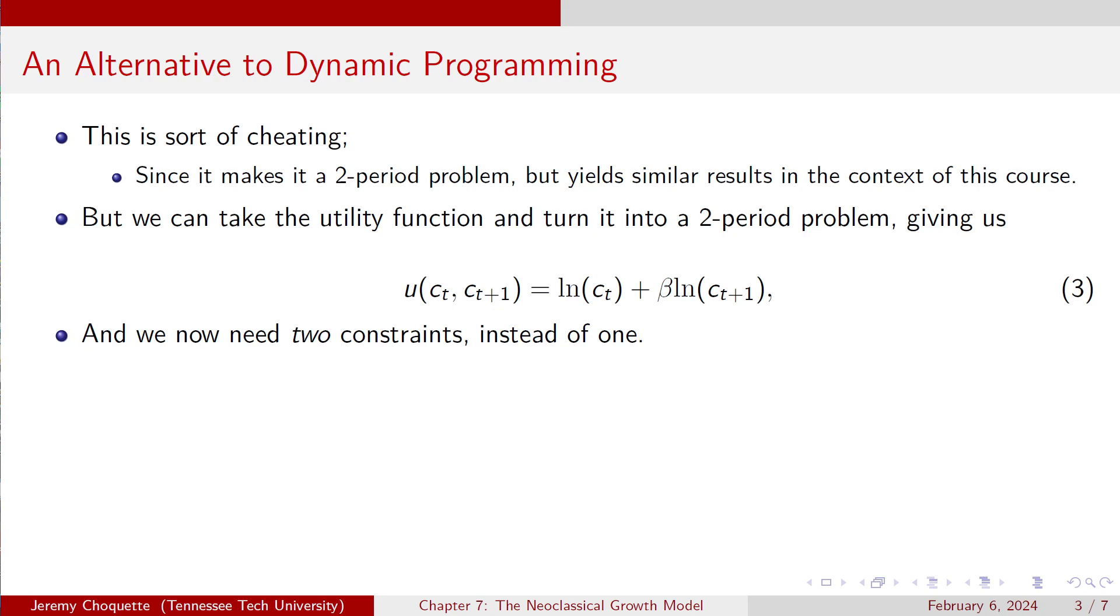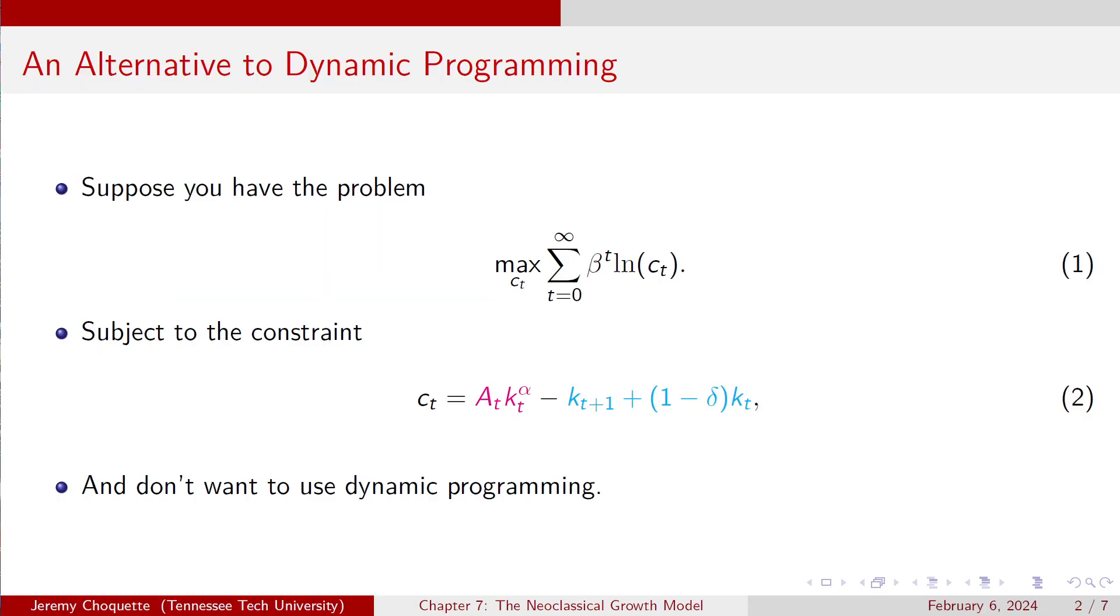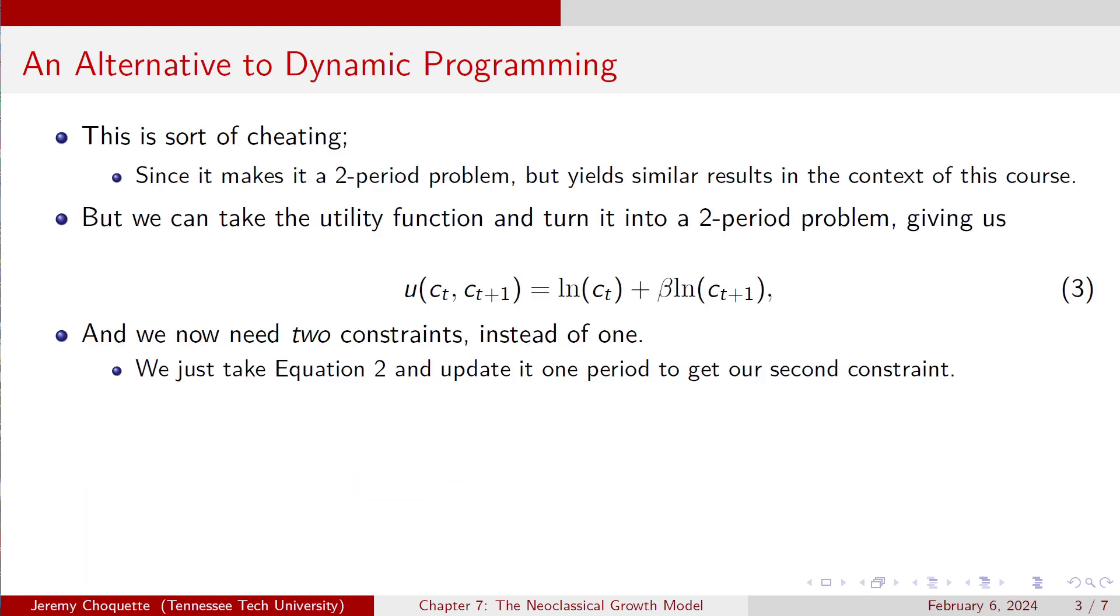But here's the thing. We need two constraints instead of one. So for the Bellman equation, you have one constraint. Here you need two constraints. All right, so what I do is I take equation 2, which was this constraint, right? I take that and I update it one period. And that gives me our second constraint. So my first constraint and my second constraint. So anywhere you see a t, you add 1 to it. And that's your second constraint, right? So ct plus 1 equals at plus 1 times kt plus 1 to the alpha minus kt plus 2 plus 1 minus delta kt plus 1. Cool.